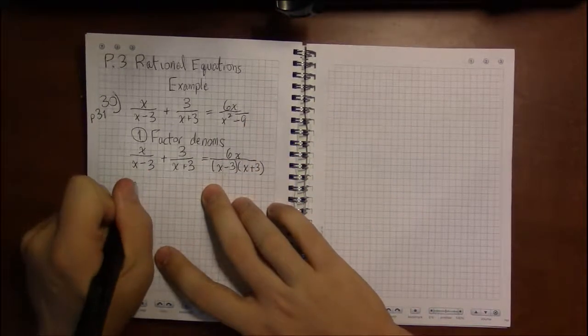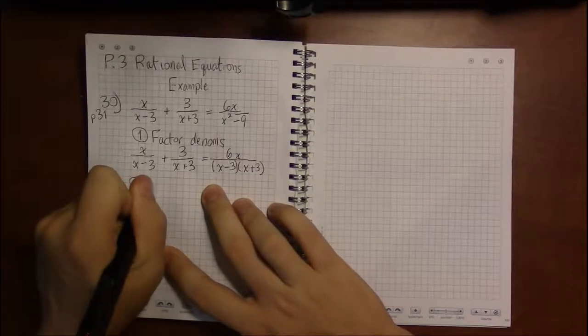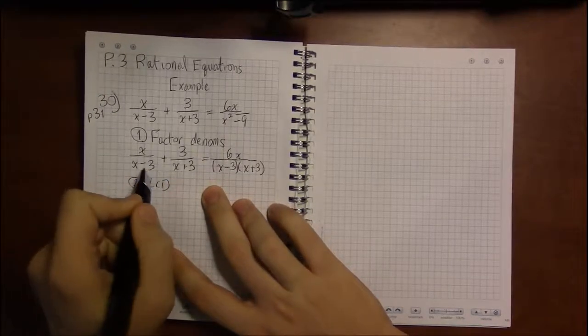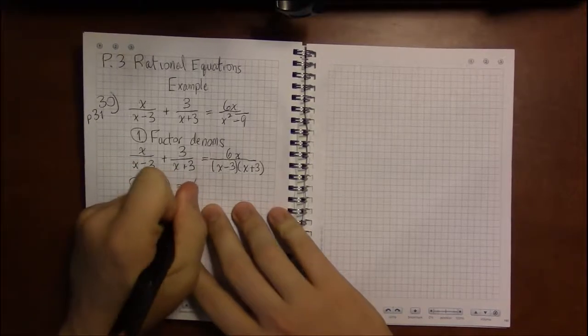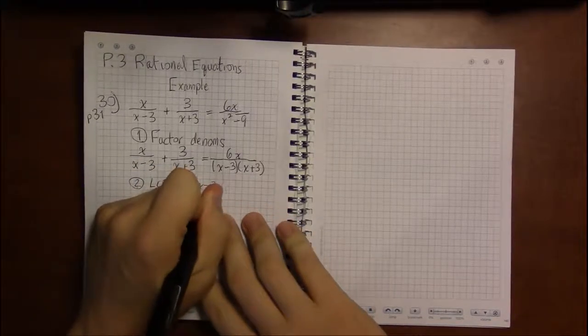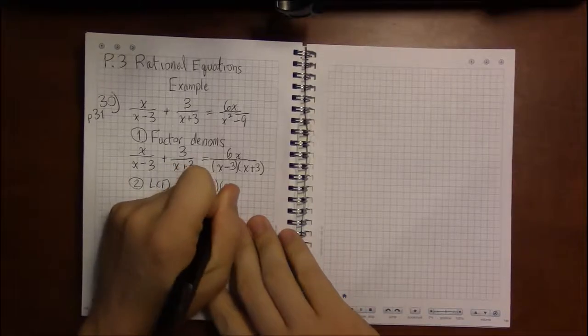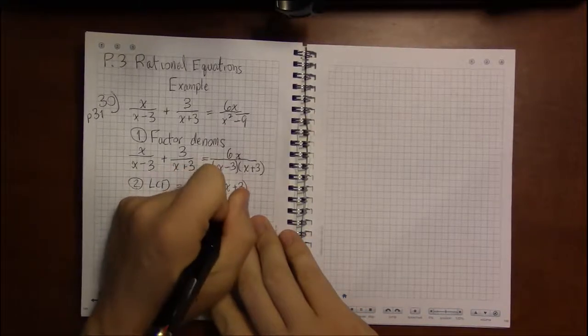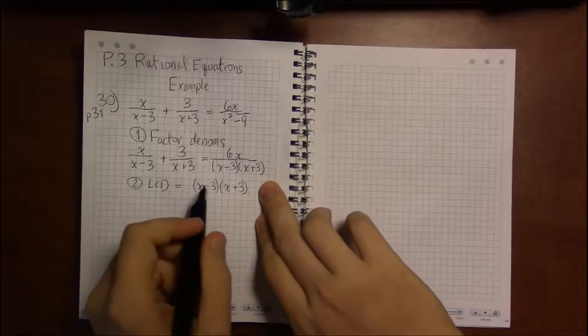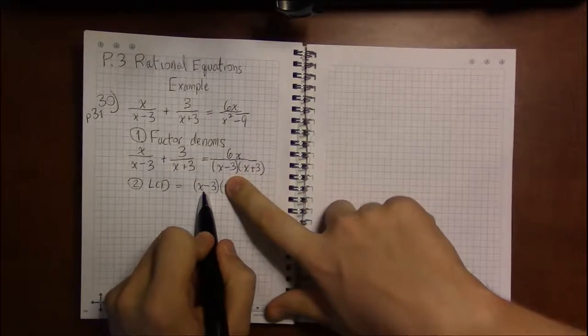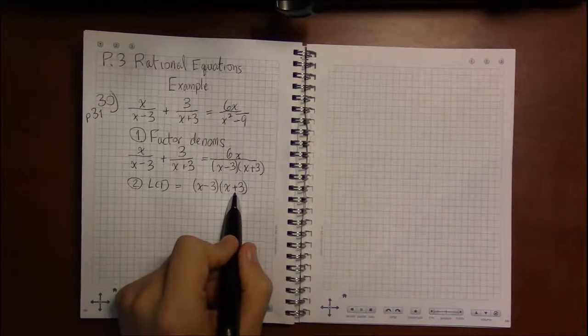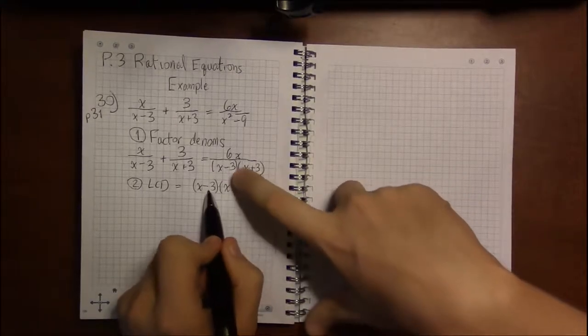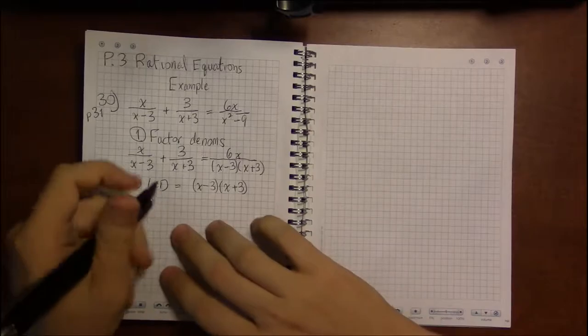So now we need a least common denominator. We need an x minus 3. We also need an x plus 3. And then when we see the denominator on the right, we have x minus 3 and we have x plus 3. So there's no need to repeat either of those. So that's our least common denominator.